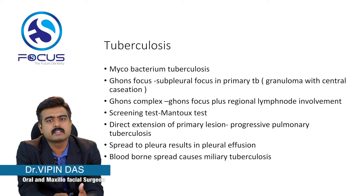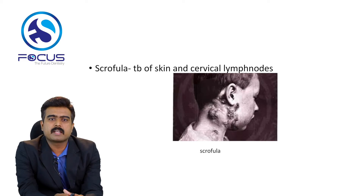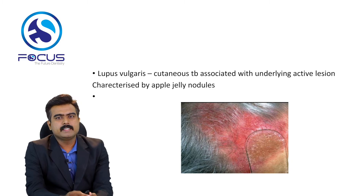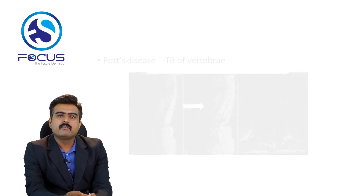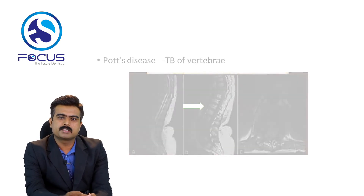Direct extension of the primary lesion is known as progressive primary tuberculosis. Spread to the pleura results in pleural effusion. Blood-borne spread causes miliary tuberculosis. Skin involvement in TB is known as scrofula — involving the skin and cervical lymph nodes. Lupus vulgaris is cutaneous TB associated with an underlying active lesion, characterized by apple jelly nodules as seen in the picture.